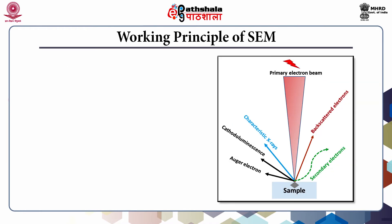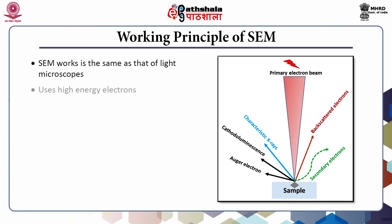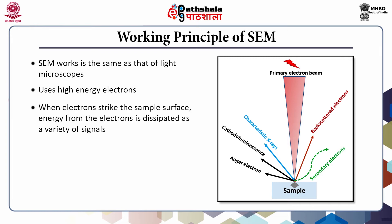The principle on which scanning electron microscopy works is the same as that of the light microscope, but the difference lies in the use of a focused beam of high-energy electrons instead of photons. In light microscopy, photons are used for sample visualization. The electrons carry significant kinetic energy, and when the incident electrons strike the sample surface, the energy from these electrons is dissipated as a variety of signals, generated as a result of interactions between electrons and the sample.